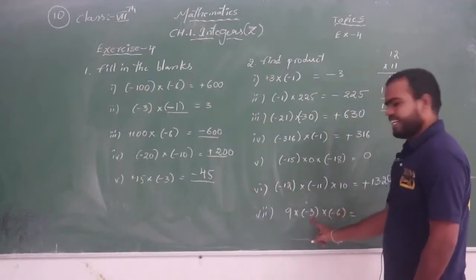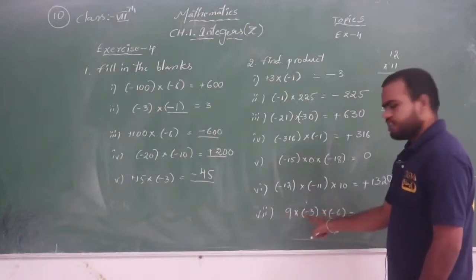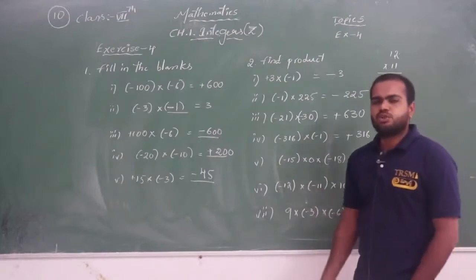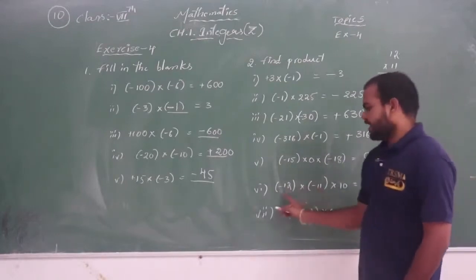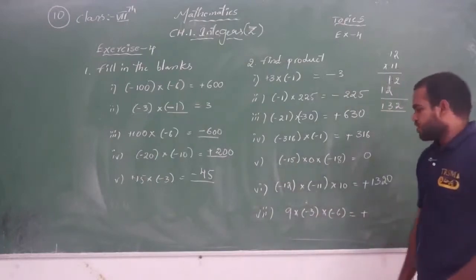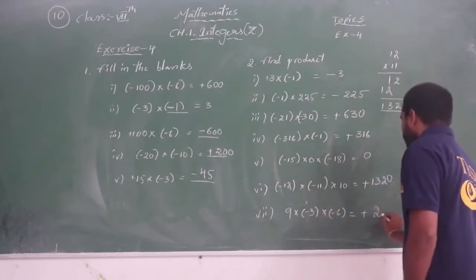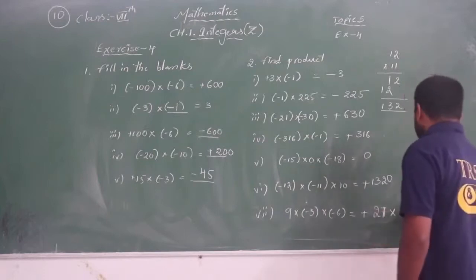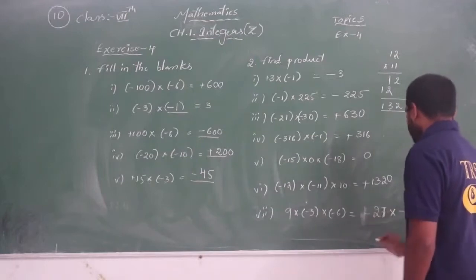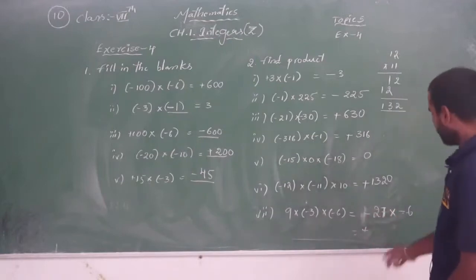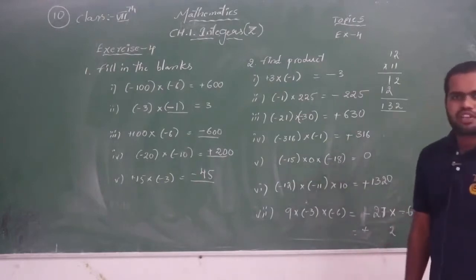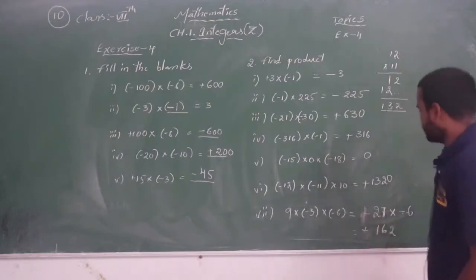Now see the last one: 9 into minus 3 into minus 6. First, plus into minus is minus, then minus into minus is plus. We have 2 negative integers here — 2 is an even number, so the product of an even number of negative integers gives a positive result. 9 into minus 3 is minus 27. Then minus 27 into minus 6: minus into minus is plus, and 6 sevens are 42, carry 4, 6 twos are 12 plus 4 is 16 — so the answer is 162.